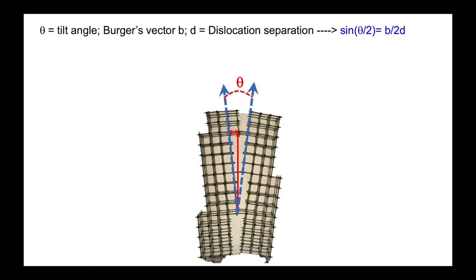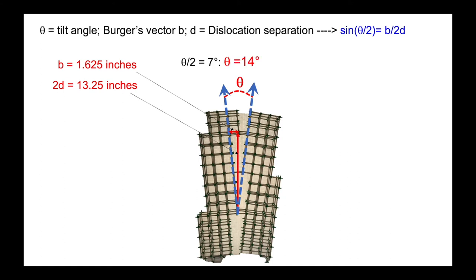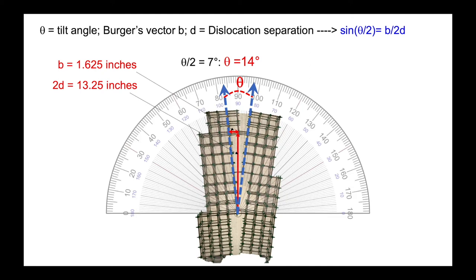Let's verify the formula relating the Burgers vector and dislocation separation using our 3D model. The Burgers vector measured carefully is 1.625 inches; twice the dislocation separation is 13.25 inches — this yields a theta value of 14 degrees. Adding a protractor confirms it: seven degrees on one side, seven degrees on the other, giving 14 degrees total. The formula based on simple trigonometry works well.